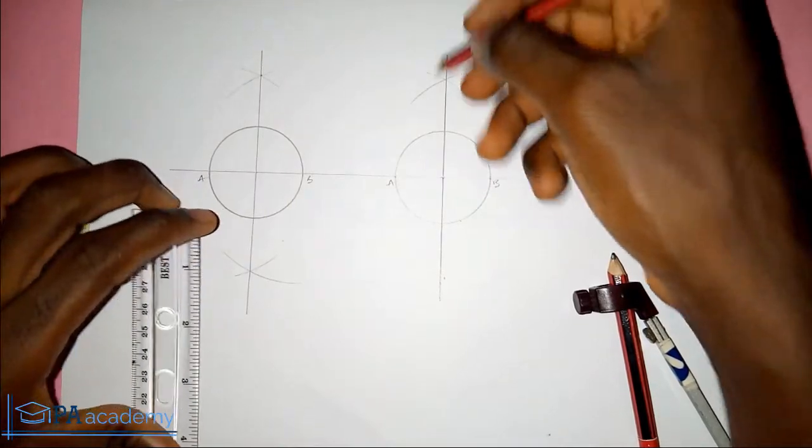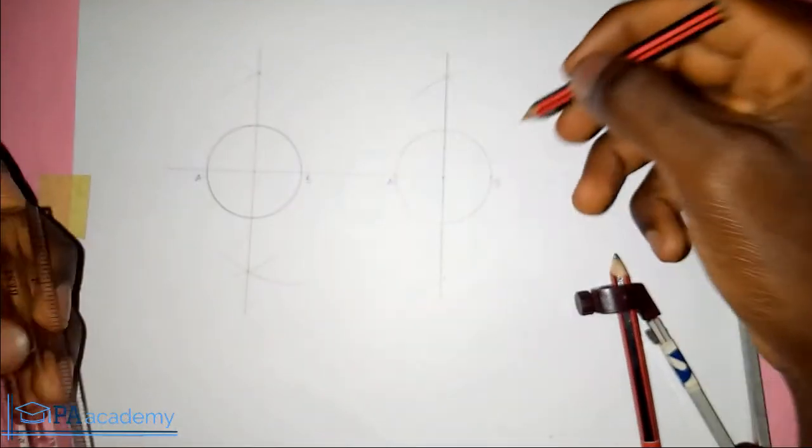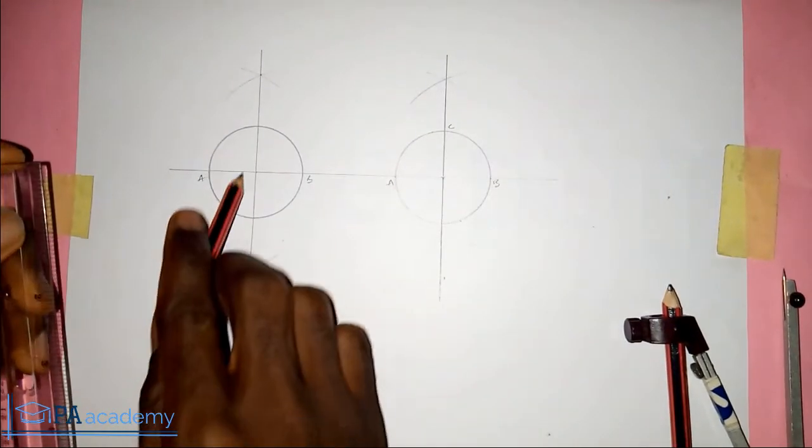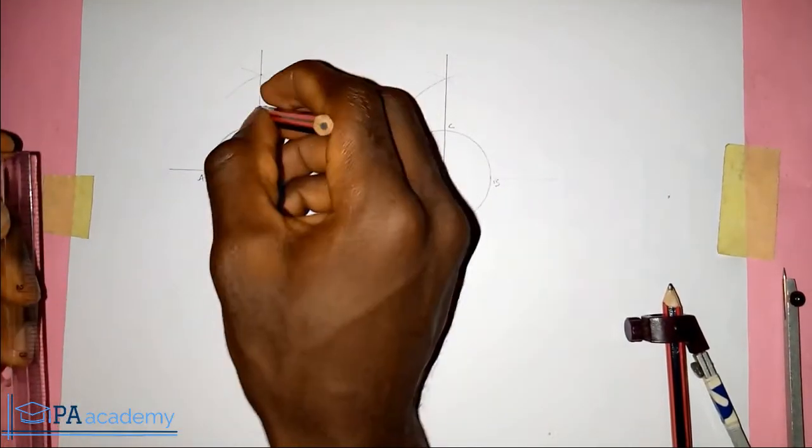So now where this perpendicular line is touching this circle, let's call it point C. And where it is touching this particular circle, let's call it point D.